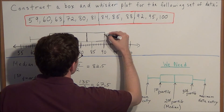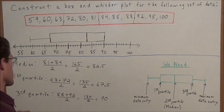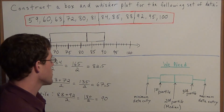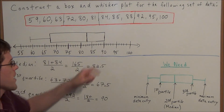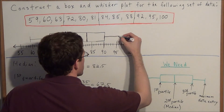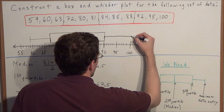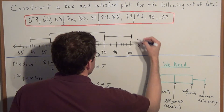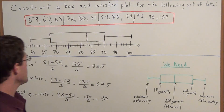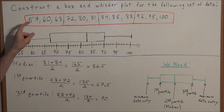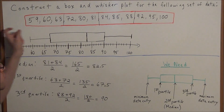Finally, the maximum data entry is 100, so we extend the line at the end of the box and place our end whisker at 100. This completes the box and whisker plot for this data set of 12 numbers.